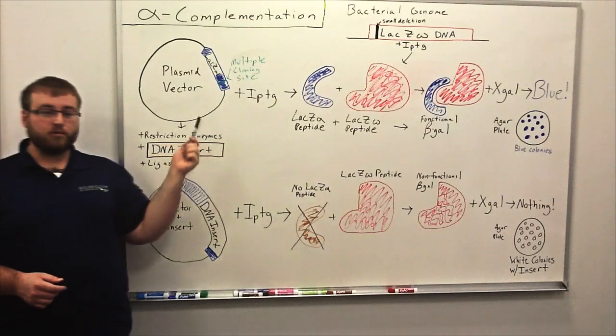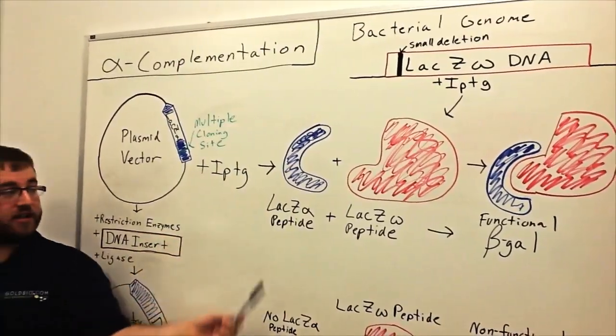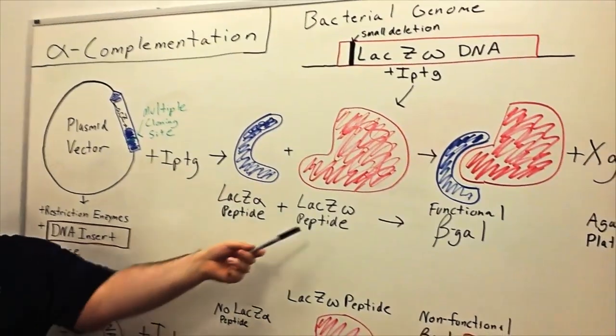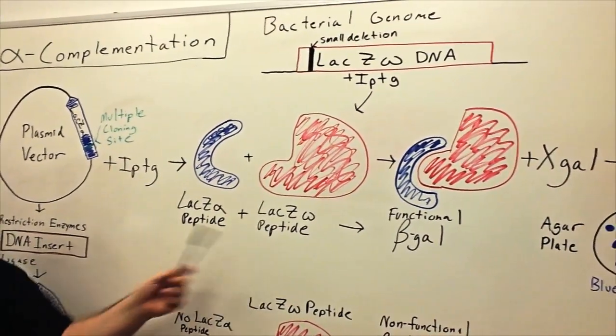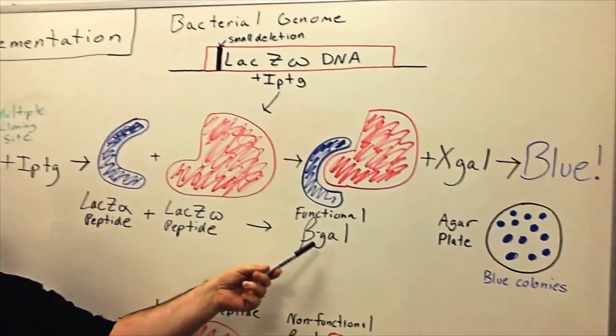When the plasmid is transformed into the corresponding cell and expressed with IPTG, it creates the LAC-Z alpha peptide and the LAC-Z omega peptide. When these two peptides are induced together, they create one functional beta-gal enzyme.